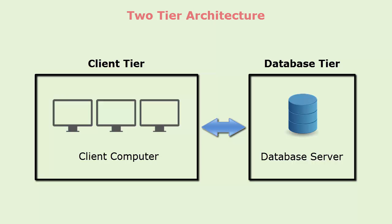Two tier architecture. A two tier application is also known as a client-server application. Two tier architecture is divided into two parts: the client application and the database. The client system handles both the presentation and application layers, and the server system handles the database layer. The communication takes place between the client and the server — the client system sends the request to the server system, and the server processes the request and sends back the data to the client system.